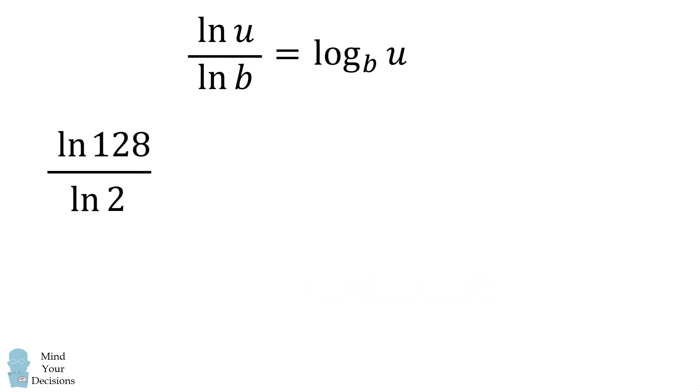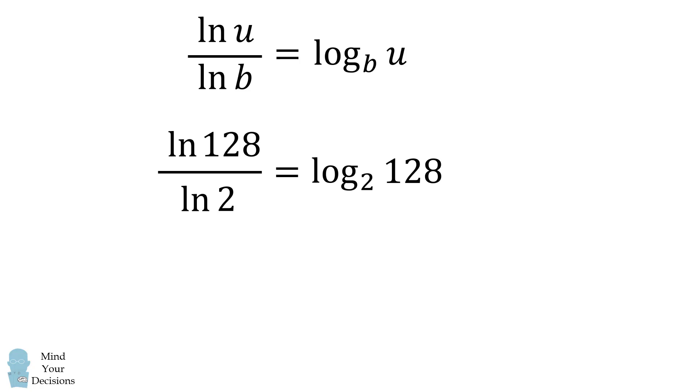We can then simplify this formula one more time using the change of base formula. The natural log of 128 over the natural log of 2 will be equal to log base 2 of 128. 128 is equal to 2 to the power of 7, and therefore this simplifies to be 7. And that's our answer.